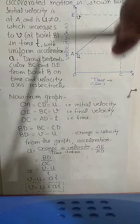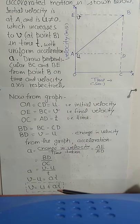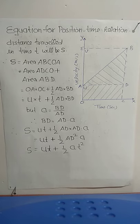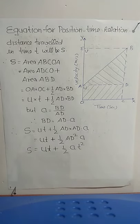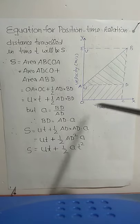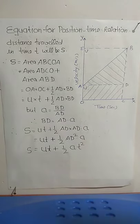This graph is the velocity-time graph. We will find the remaining two relations using the same approach. Our first equation is V = U + AT. Now I am going to derive the second equation, that is S = UT + ½AT². The graph between velocity and time is shown here and is exactly the same as in the case of equation number 1.